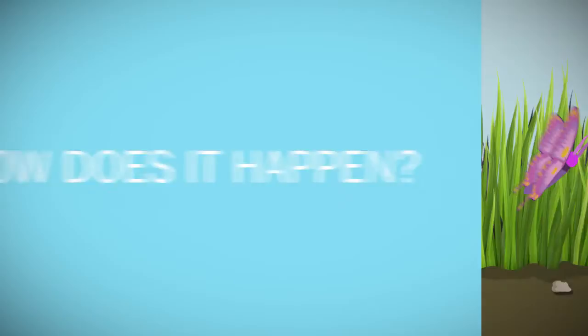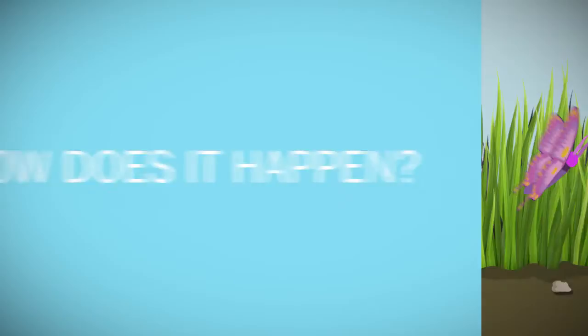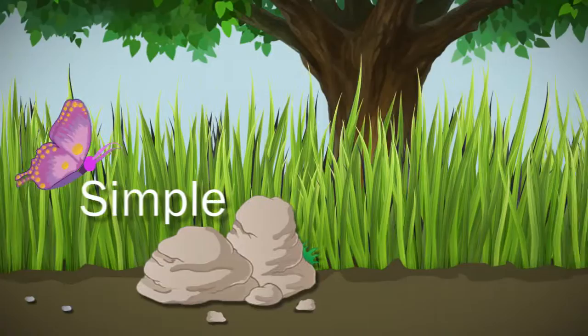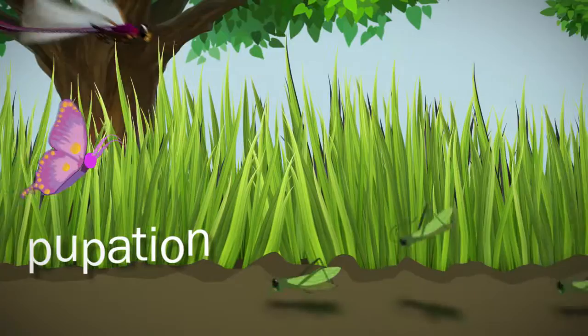So, how does it happen? Well, metamorphosis could either be called simple, since this group of animals exhibit simple transformation and lack a developmental stage called pupation, as in grasshoppers, dragonflies, and cockroaches,